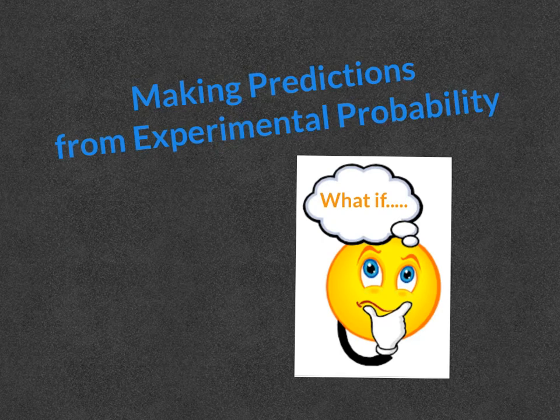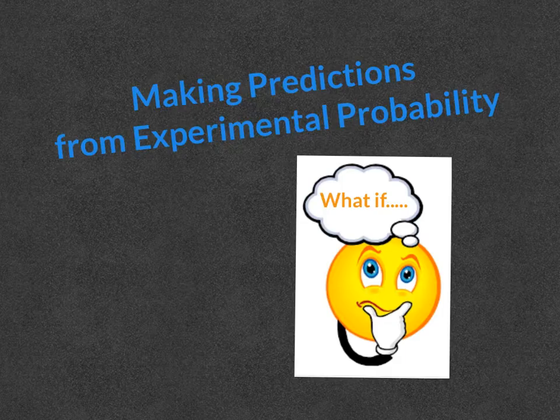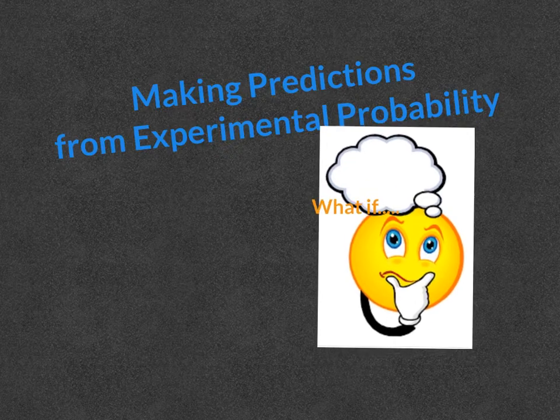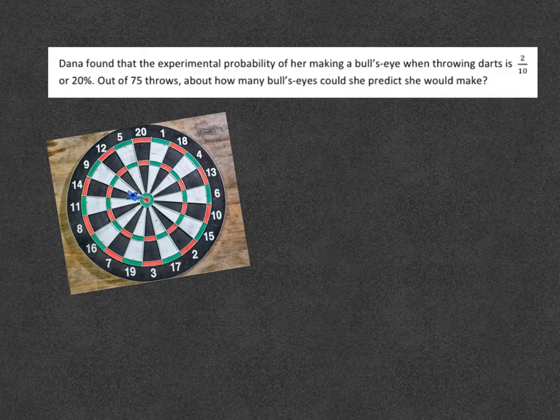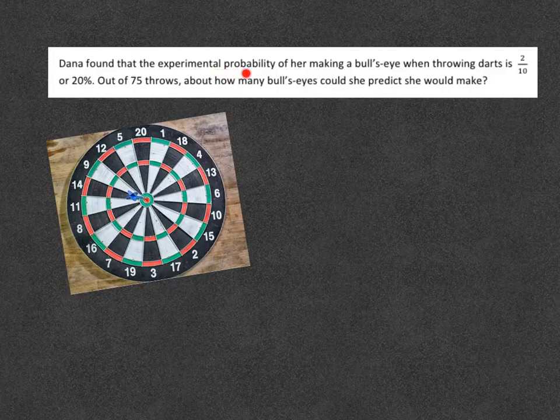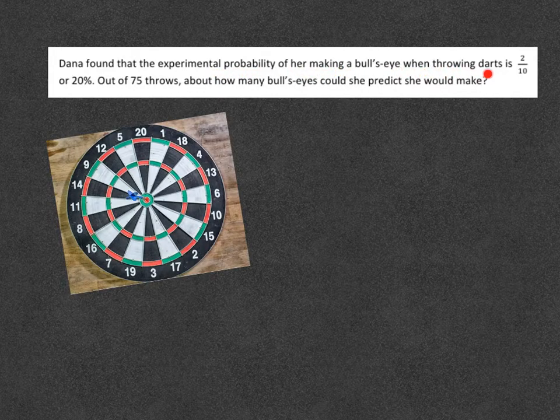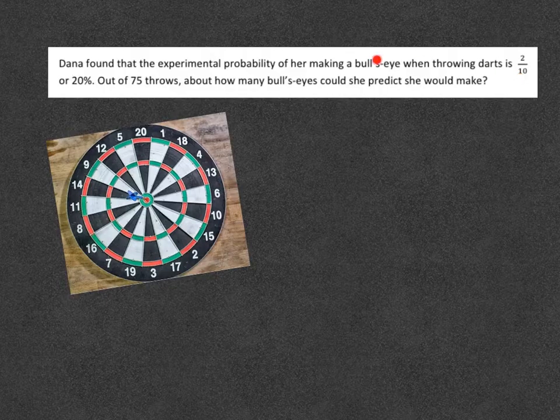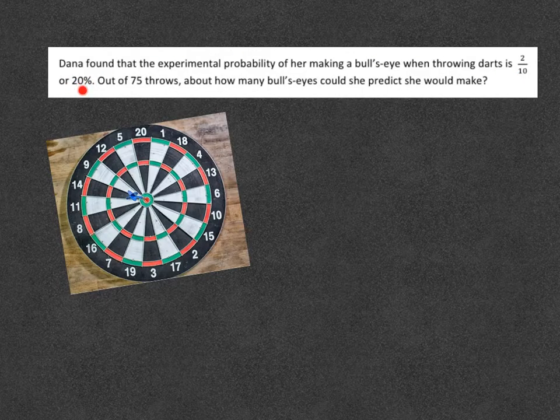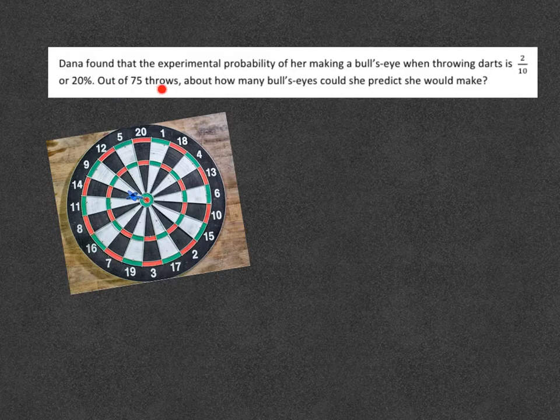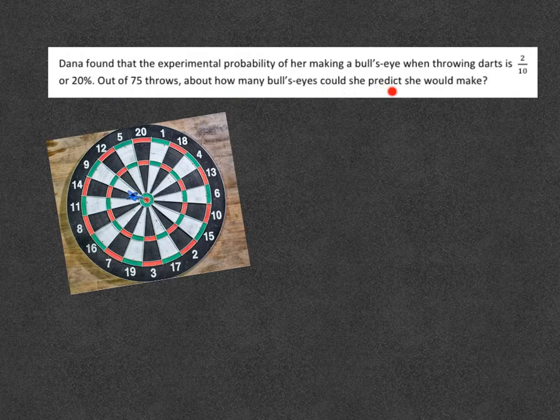This video is going to look at making predictions based off of some data that's already been given to you from a previous experience. We're going to think what would happen if. The first example we're going to look at says Dana found the experimental probability of her making a bullseye when throwing darts is two tenths or 20%.